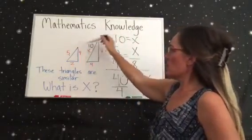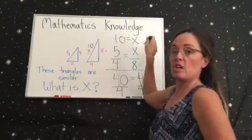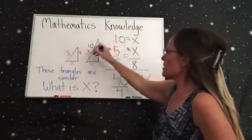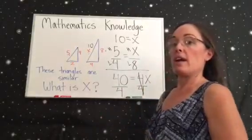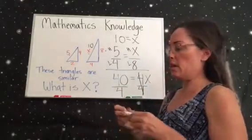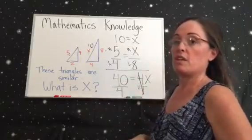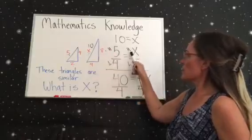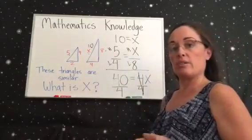Whatever side you use on top needs to be the same side that's used on the other fraction. So we have hypotenuse, hypotenuse, length, length. A lot of times people get that messed up, so just to make sure you can even write the letters like, okay, there's the hypotenuse, there's the hypotenuse, here's the length, here's the length, and that way you'll get the correct X.